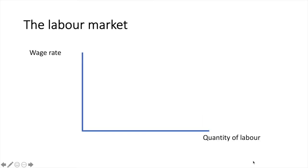This is very similar to the supply and demand graph you learned in AS but it corresponds to the market for labour. Very simply, the equilibrium wage rate and equilibrium quantity exist where the supply of labour equals the demand for labour.